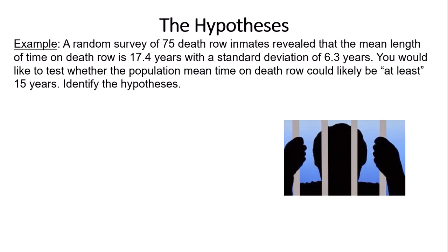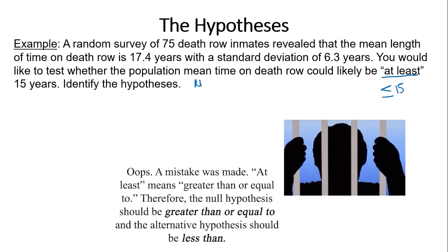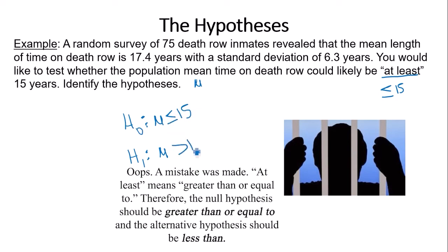Similar example: A random survey of 75 death row inmates revealed a mean of 17.4 years with a standard deviation of 6.3 years. You would like to test whether the population mean time on death row could likely be at least 15 years. "At least" means greater than or equal to, which includes equality, so it goes with the null hypothesis: mu greater than or equal to 15. The opposite is less than, so the alternative hypothesis is mu less than 15.